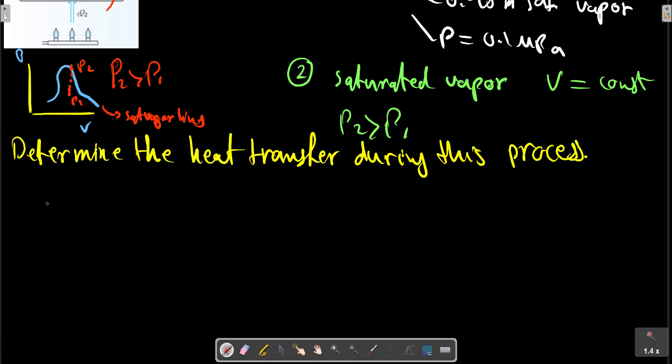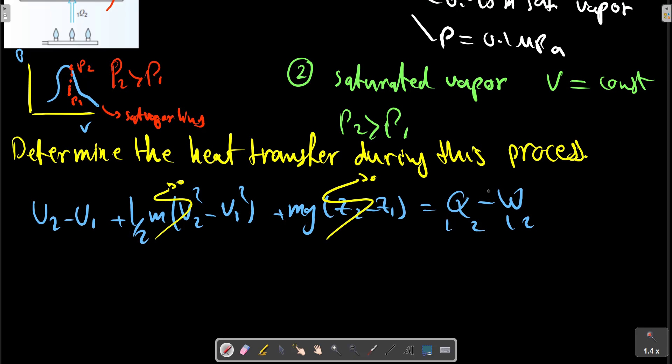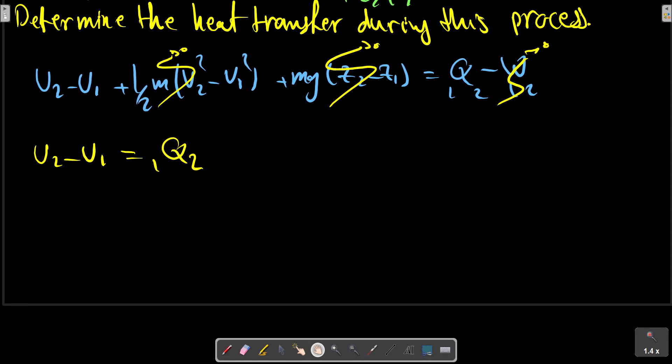We have from the first law that U2 minus U1 plus kinetic and potential energy changes minus work equals Q. In this case, we don't have any change in the center of mass control, and also the altitude is the same. Work is zero, no work on the system. U2 minus U1 equals Q from point 1 to point 2. So we should first calculate the internal energy for this problem.